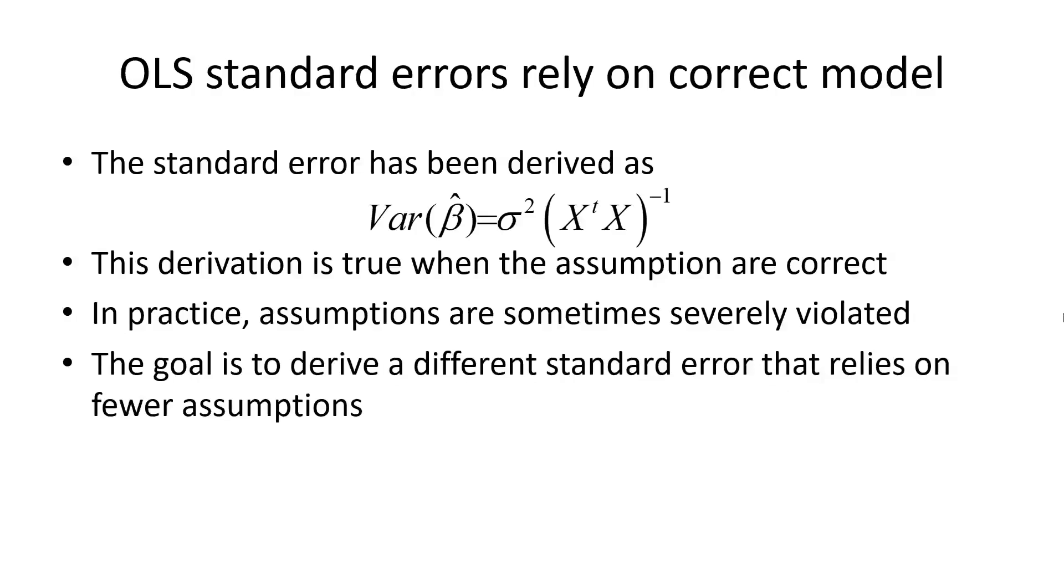We have computed the variance of beta based on the model and its assumptions, and we've gotten a simple, beautiful formula. So when the assumptions are incorrect, then of course the formula is incorrect.